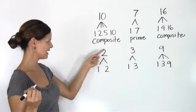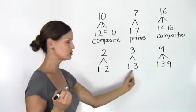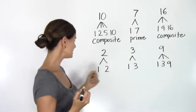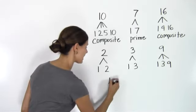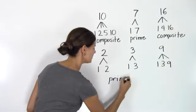2 and 3 both only have two factors, the number itself and the number 1. So both 2 and 3 are prime numbers.